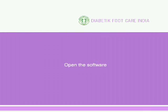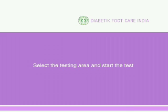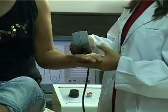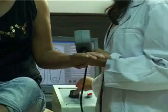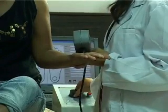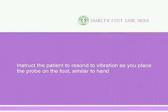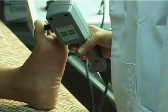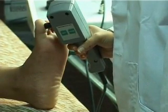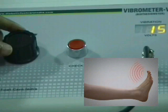Open the software and enter the patient details. Select the testing area and start the test. Touch the tip of the vibration probe on the patient's palm to find out if they feel the vibration, then increase the vibration strength. Instruct the patient to respond to vibration as you place the probe on the foot, similar to the hand. Place the tip of the probe gently at the great toe and increase the voltage slowly.